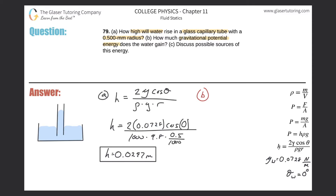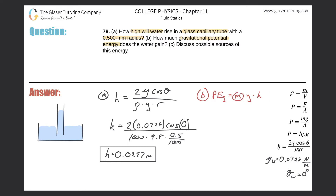For gravitational potential energy, the formula is: PE = mass × gravity × height (or change in height). Looking at the picture, we have the initial water level in the container, and then the water rises up inside the small capillary tube due to capillary action. We know the height and gravity, but we don't yet know the mass — however, we can calculate it.